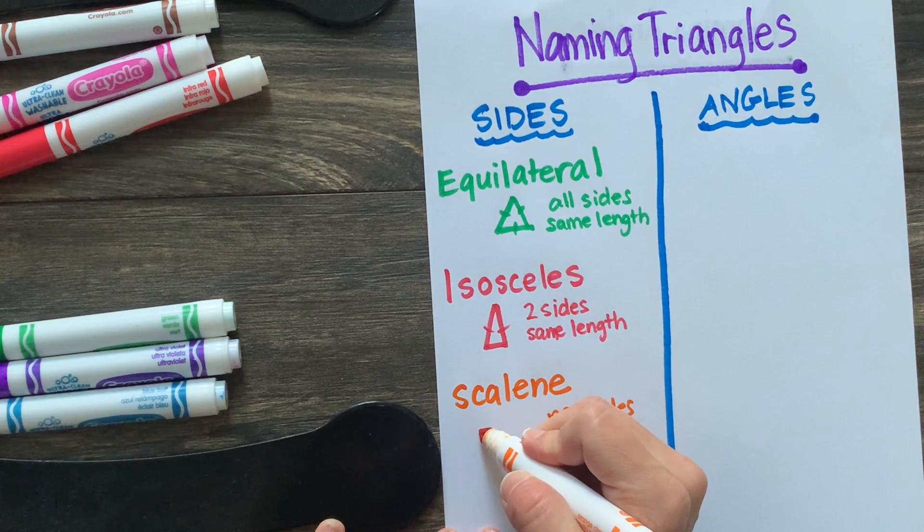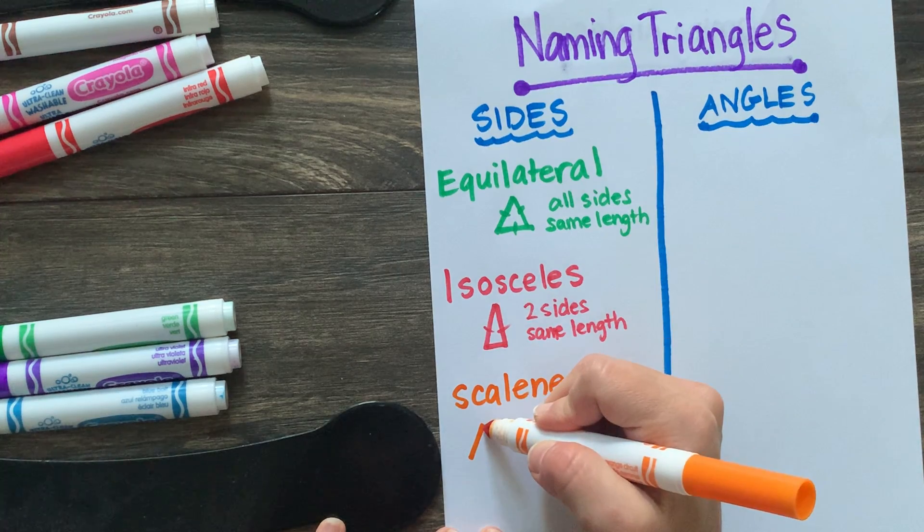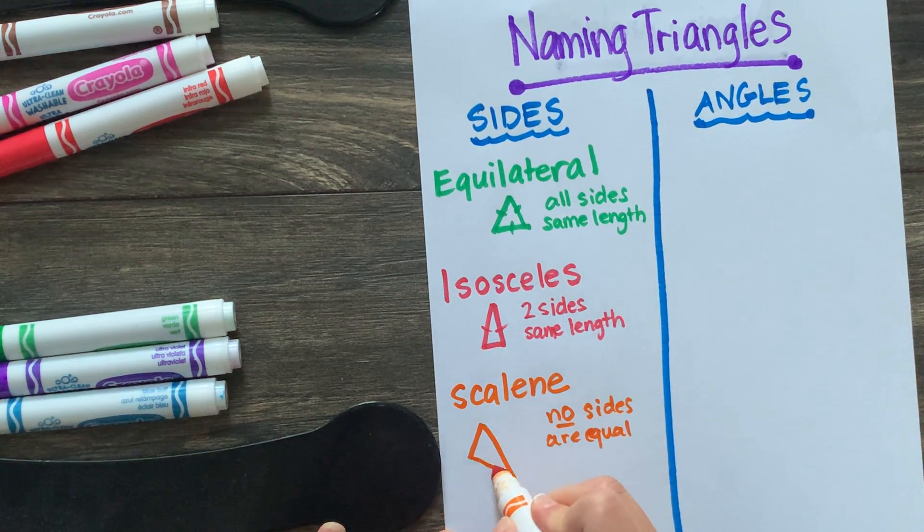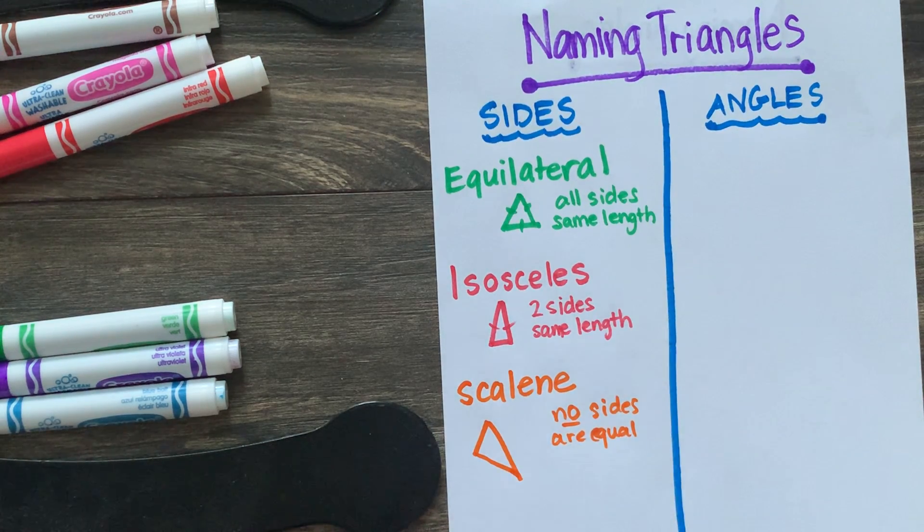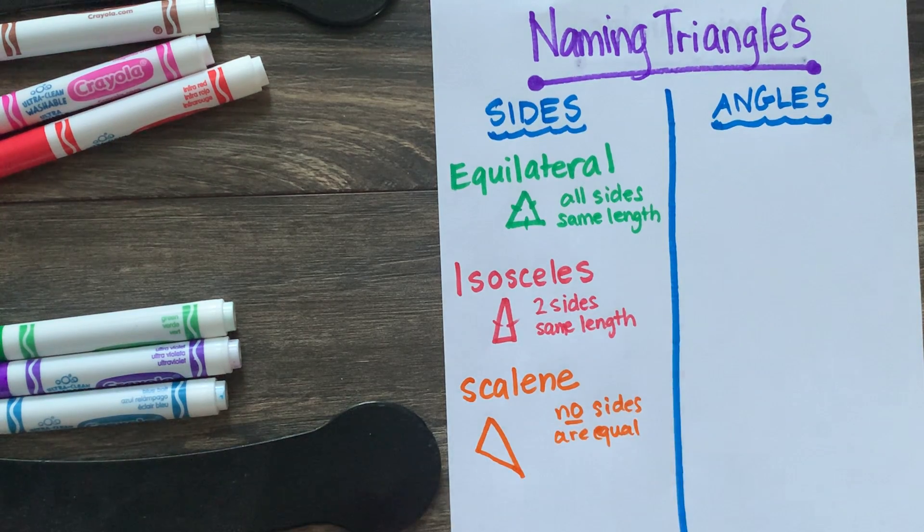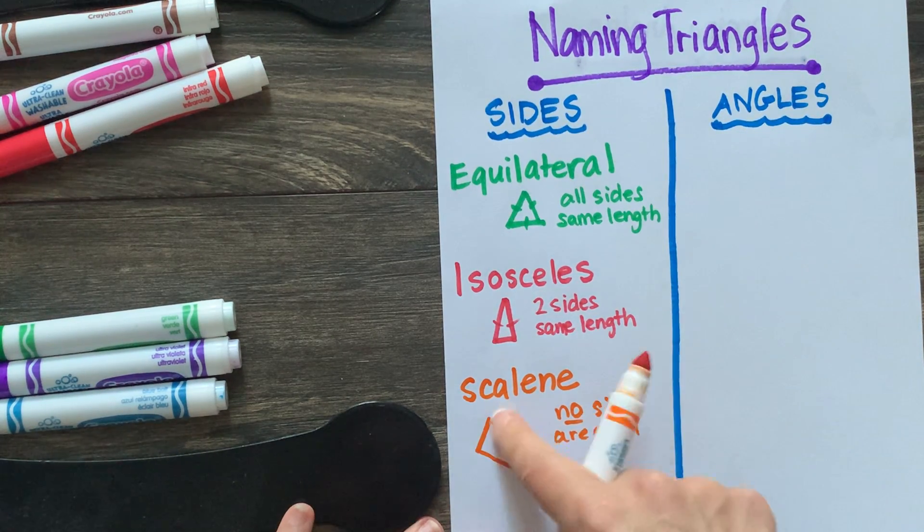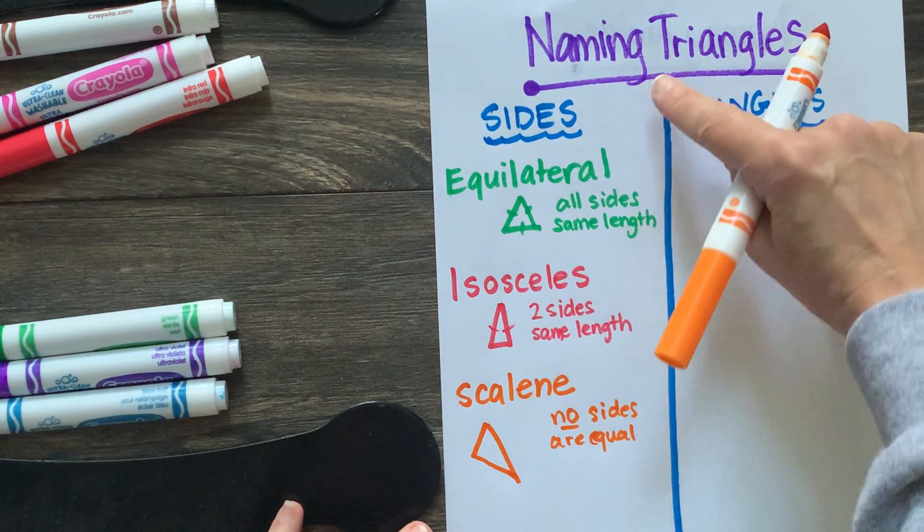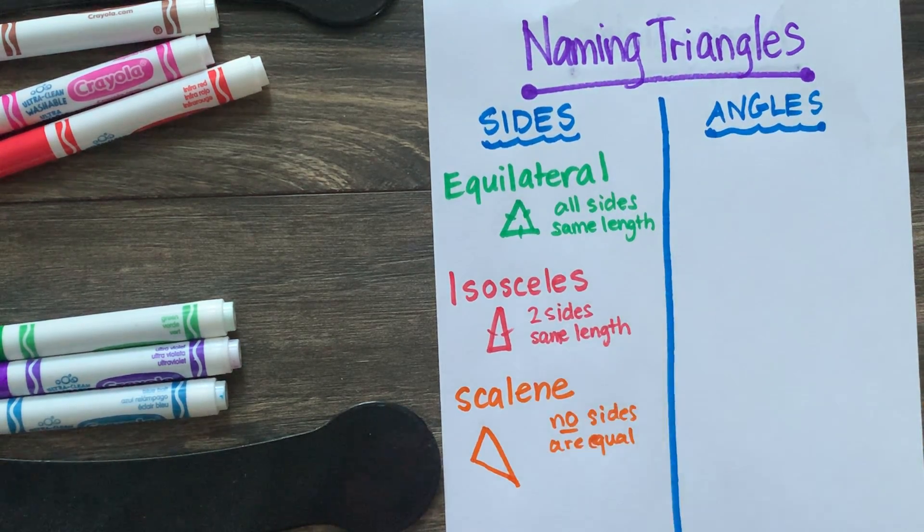In a scalene triangle, no sides are equal. They're all different lengths. So no sides are equal in a scalene triangle. I might have a medium length one here, a really long one, and then kind of a smaller version. So here, a medium, long, and small. So no sides are the same length. Notice I'm not showing any equal sides on these kinds. So a triangle can be equilateral, isosceles, or scalene.